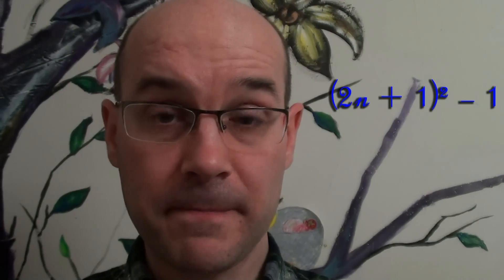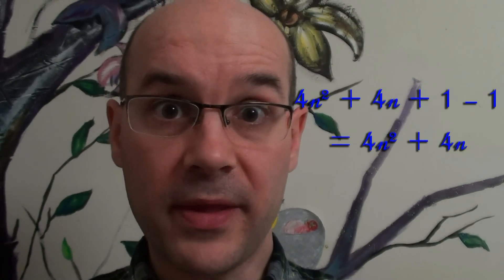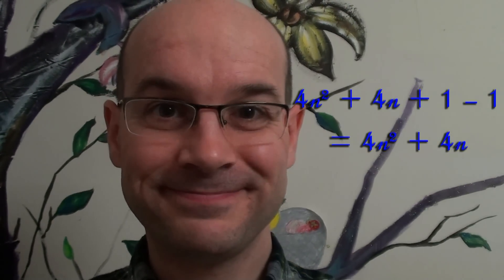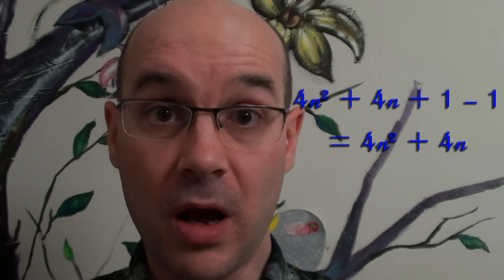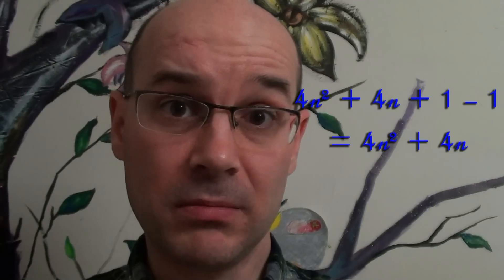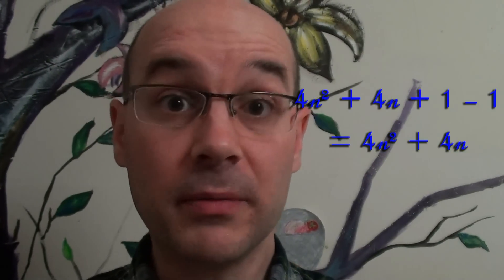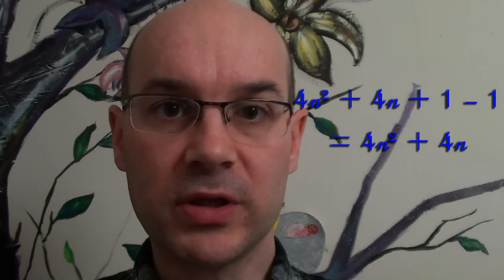So we take our odd number, square it, then subtract 1, and we get this expression. If we try to rearrange it and develop this factored square, we get that result. That is obviously a multiple of 4, but it's not obviously a multiple of 8.